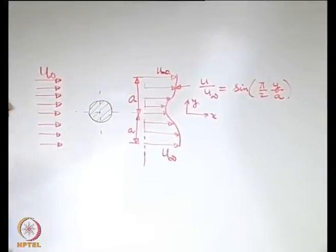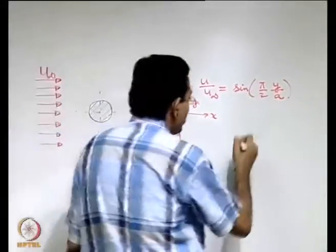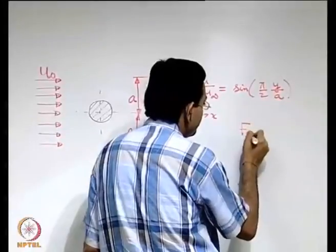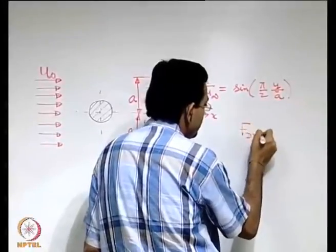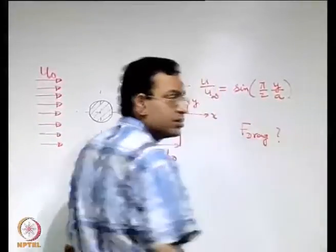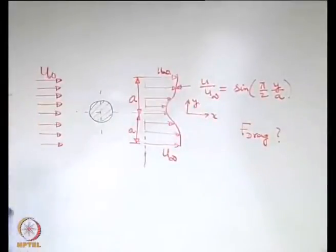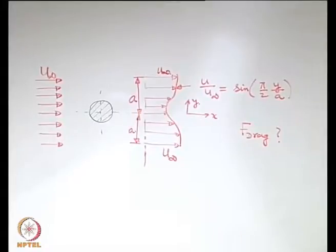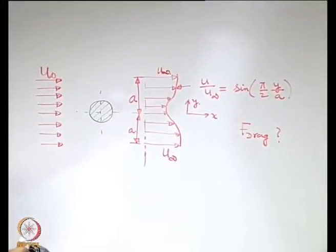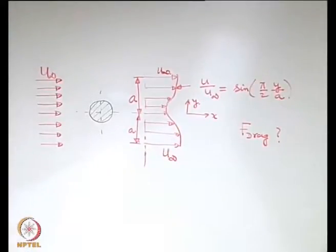The question is: what is the total drag force on the solid body exerted by the fluid? Let us assume the density of the fluid is rho, and we have to find out based on these dimensions. So how do we go about this?